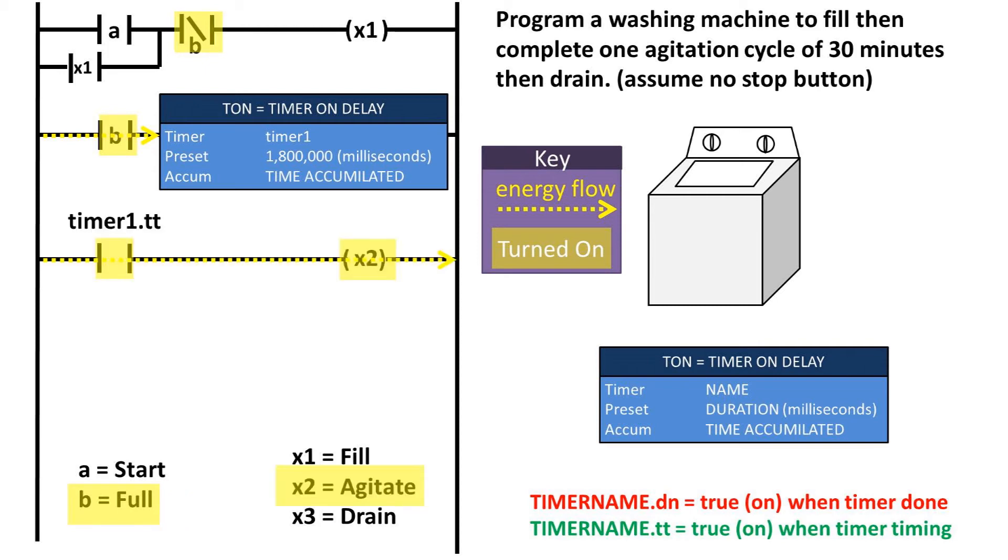The third rung will be powered on as long as the timer is timing so for 30 minutes. This will make the agitate cycle run for 30 minutes because the agitate cycle is the output.